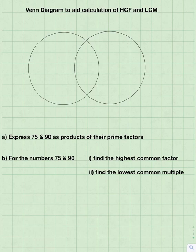The question that I've chosen is a GCSE style question and it is as follows: Express 75 and 90 as products of their prime factors.